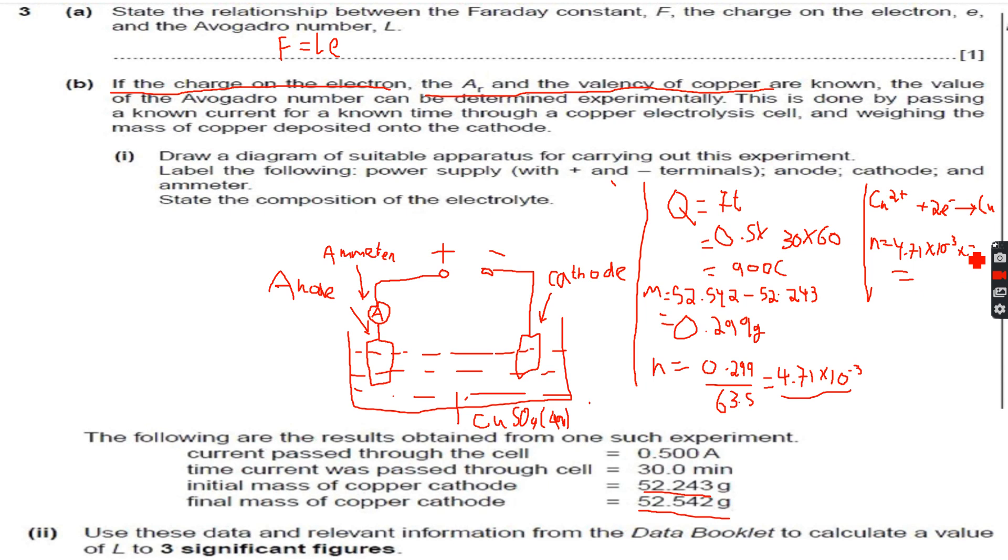So this gives us 9.42, again to three significant figures, 9.42 into 10 to the power of minus 3. So we get this. Now what we have to calculate is the Avogadro constant to three significant figures. So this is the number of moles of electrons.